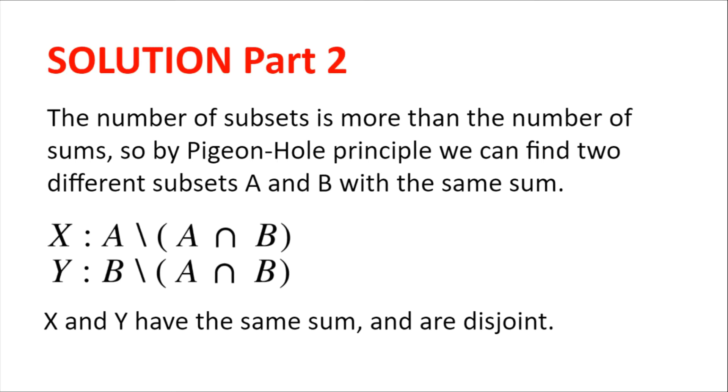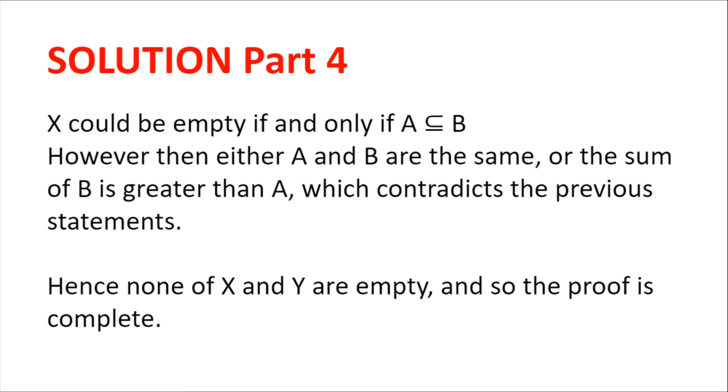However, we are not quite yet done. X could be empty if and only if A is a subset of B, so all the elements in A are in B. However, then, either A and B are the same, which we know they aren't because they're distinct, or the sum of B is greater than the sum of A, because B consists of all the elements in A and some more elements.